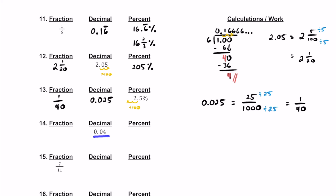Now for 14, we have a decimal — I'm just going to read it as 4 hundredths. So as a fraction, we'll write 4 over 100. Simplifying by the GCF, we can divide by 4 top and bottom. If we do that, we get 1 over 25. For the percentage, let's multiply the decimal by 100. If we do that, it'll end up being 4%.